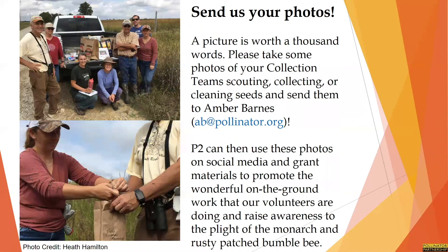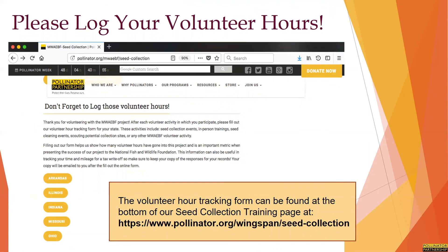Not only is this important work, but it's also really fun. Please feel free to take photos and send us pictures of your collection teams in action — we can use these photos to promote the vital on-the-ground work that our volunteers are doing and raise awareness about the declines of the monarch butterfly, rusty patch bumblebee, and our other imperiled pollinators. One of the many important measures that a grant funding agency looks at to judge the success of a project is community involvement or volunteer support. This is important for us to report back to the National Fish and Wildlife Foundation as an in-kind match of time. These records can also be beneficial for volunteers, as in some states, depending on your income, you may be able to use this information as a tax write-off, and it can also be a great way to track volunteer hours for programs such as Master Gardeners and Master Naturalists.